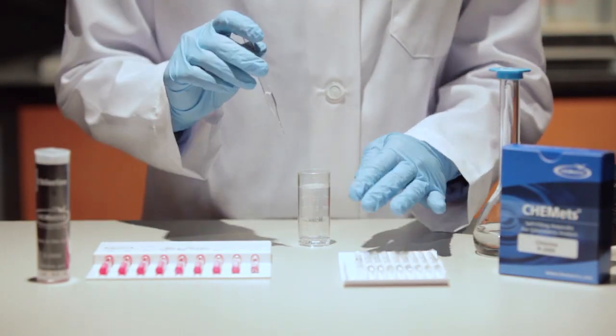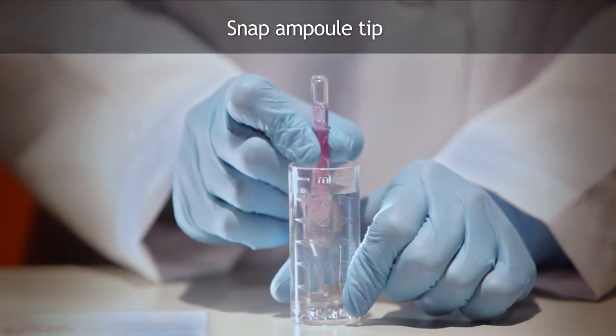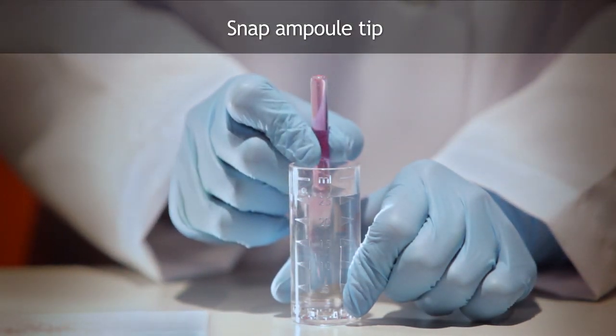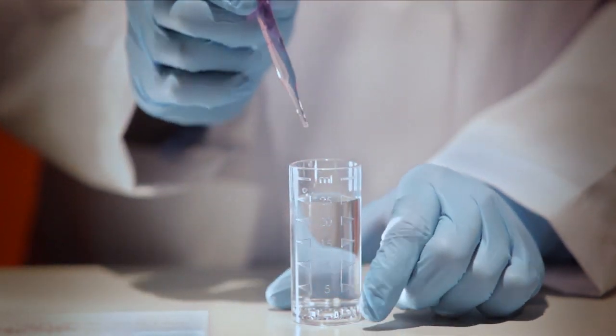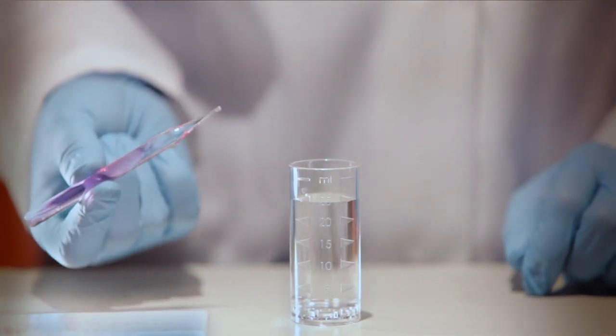Insert the tapered tip of the ampule into one of the depressions in the bottom of the sample cup. Snap the tip of the ampule by pressing the body of the ampule against the side of the cup. The vacuum in the ampule quickly pulls in the correct volume of sample.